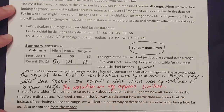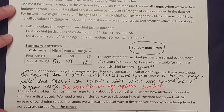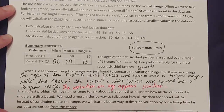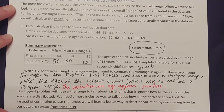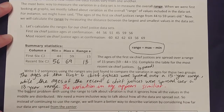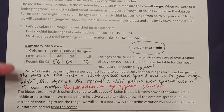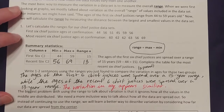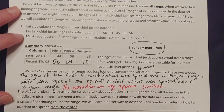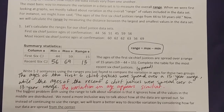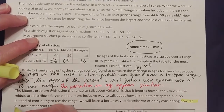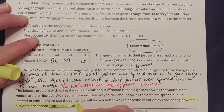The biggest problem with using the range to talk about variation is that it ignores how all the values in the middle are distributed. Range only compares the largest and smallest values, so we don't know much about the middle values. We need a more inclusive way to describe how all the data are spread out — specifically, how far our data are spread from the center.